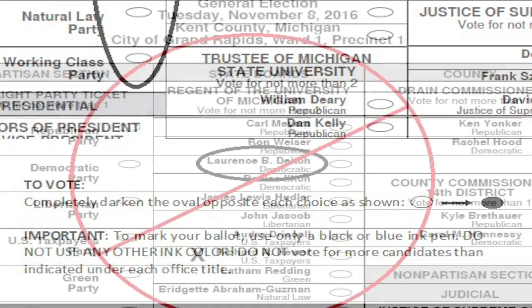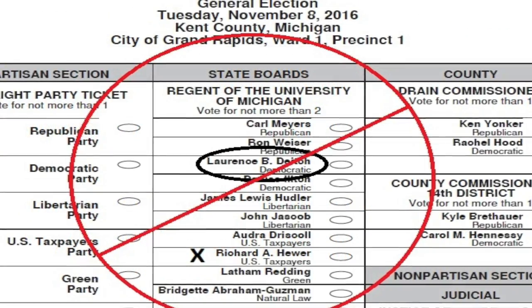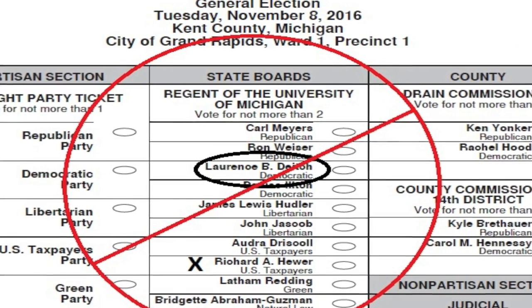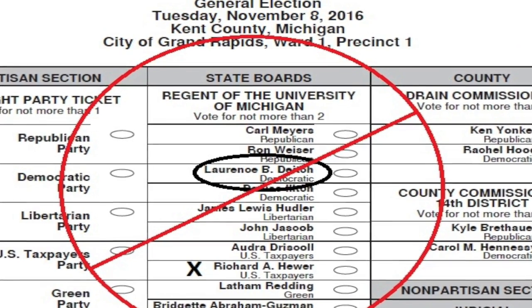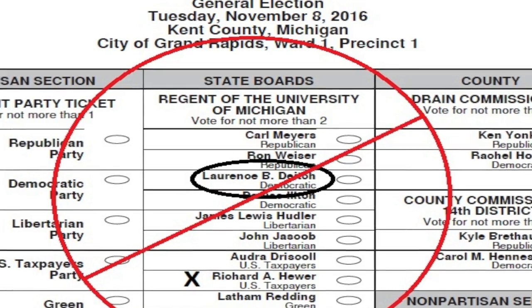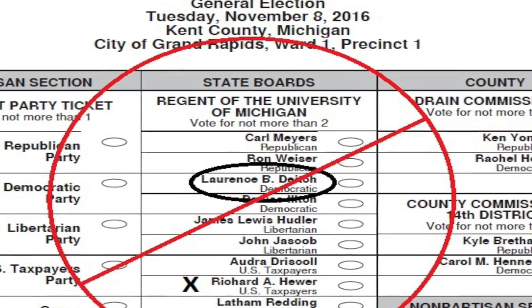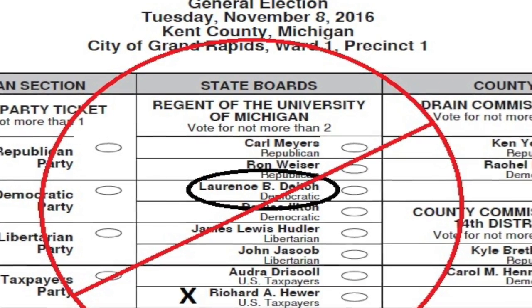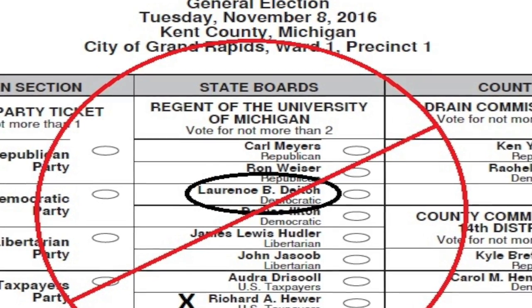Again, to ensure that your vote for that candidate or proposal is properly counted by the tabulator, you must completely darken that oval that is to the right of that candidate or proposal.